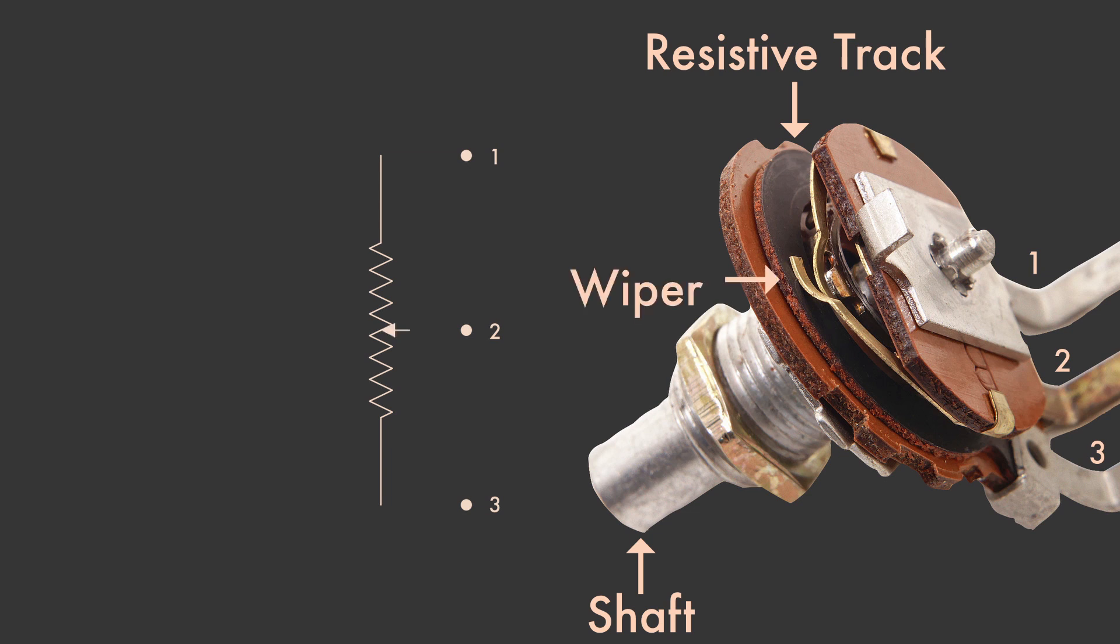The outer two terminals are connected to the track which acts as a resistor between the two. The resistance between the outer two terminals gives the pot its resistance rating. The middle terminal is connected to the rotatable wiper that rides upon the track. It divides the track's resistance into two halves.